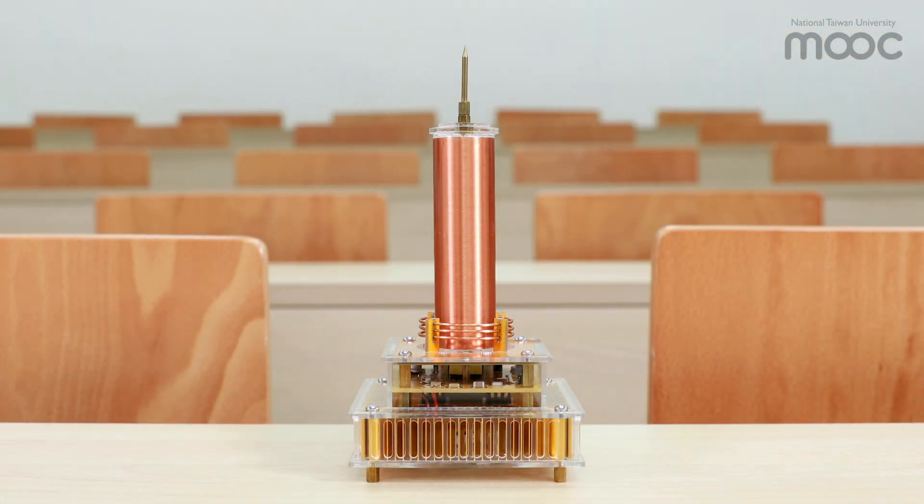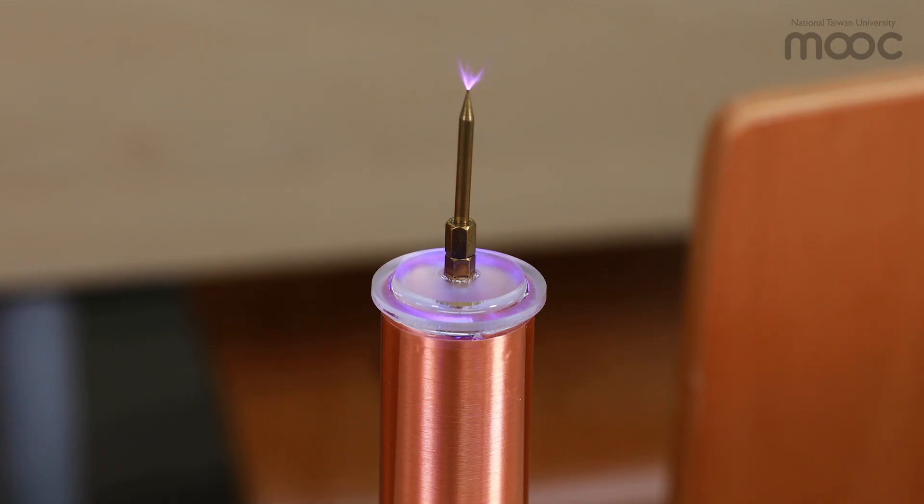Now we turn on the Tesla coil. We can observe that the strong electric field at the tip of the secondary winding creates an electric arc or plasma as well as a buzzing sound.